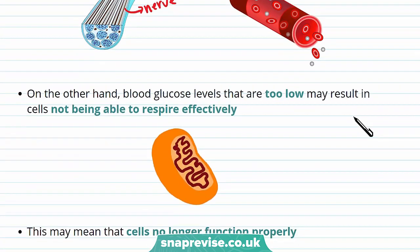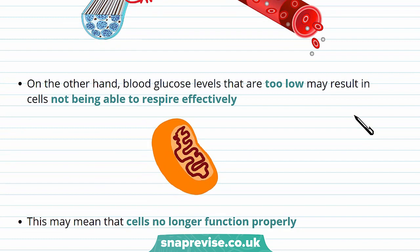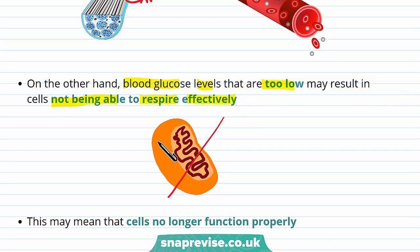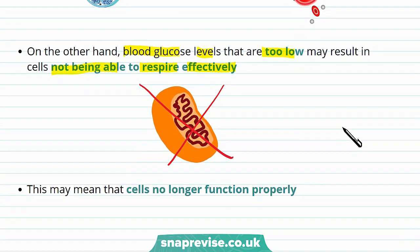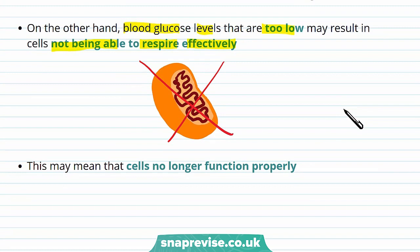On the other hand, when blood glucose levels are too low, this may result in cells not being able to respire effectively. This is because they don't receive sufficient glucose needed for respiration. As respiration transfers energy to the cell, if cells can't respire, they can no longer function properly.